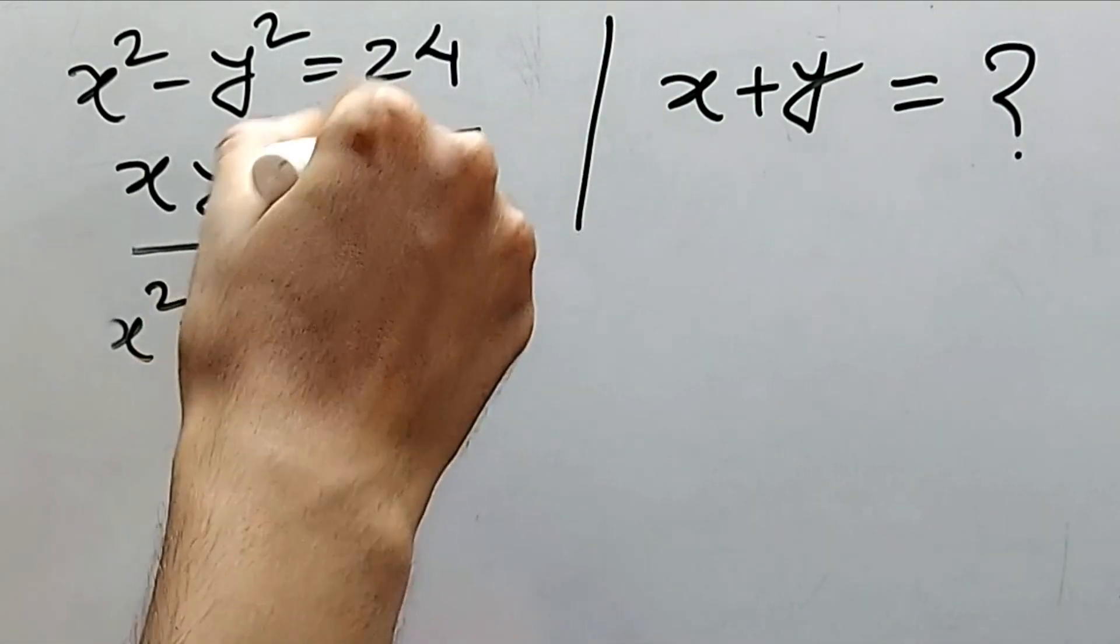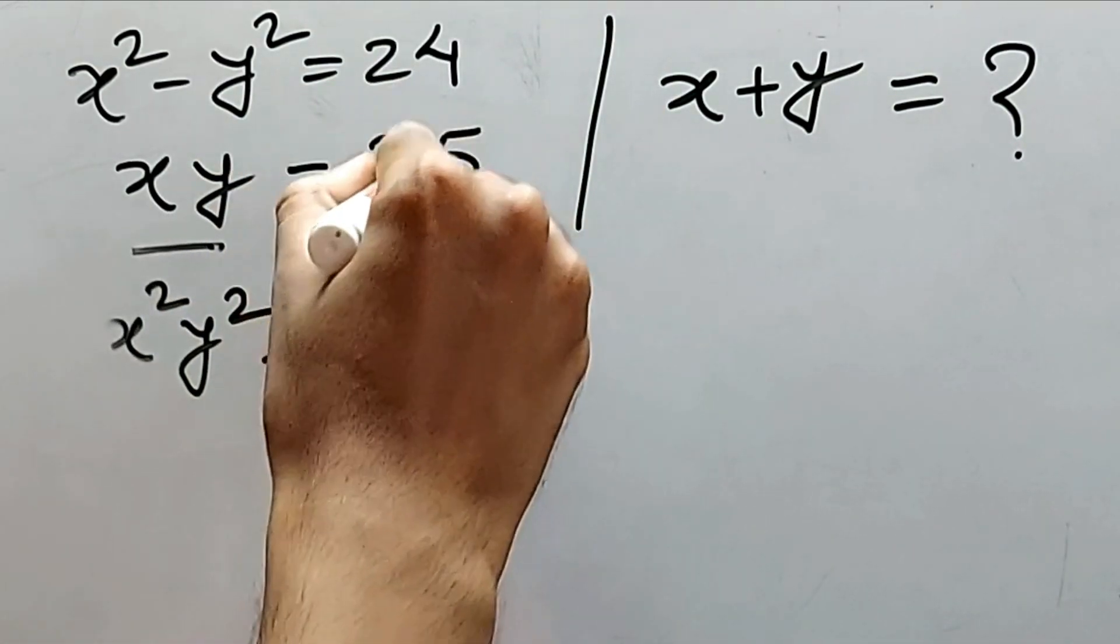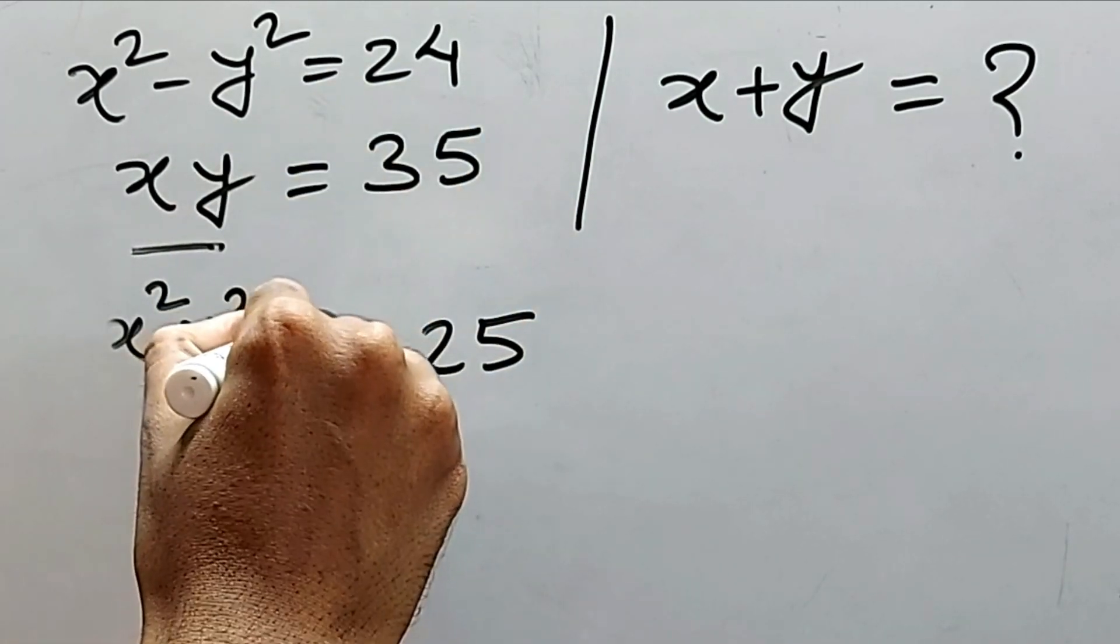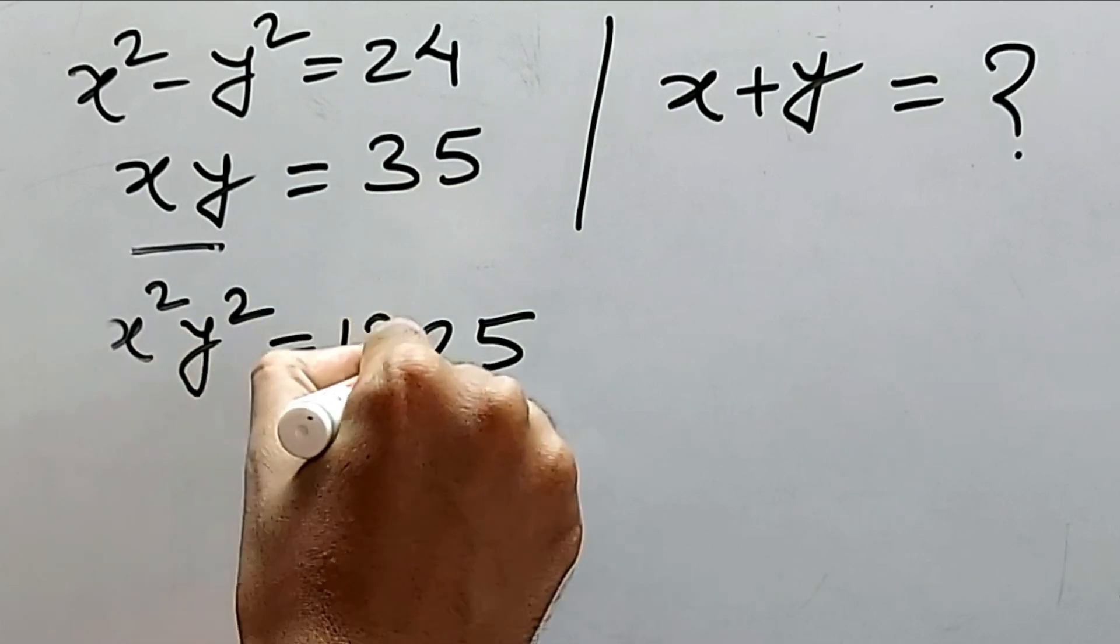What is the value of 35 squared? We know how to get square of this, right? Five fives are 25 and three into four, that is 12. So one, two, two, five.